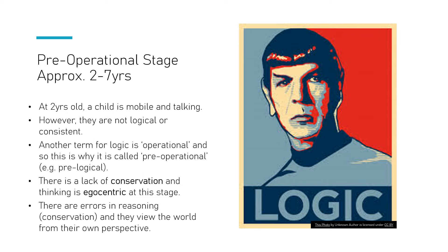Piaget pointed to things such as conservation tasks — pouring water between cups of different shapes where children think the amount is different — and egocentrism, being quite self-centred. These are both features of this stage, between two and seven years. Children in the pre-operational stage make errors in reasoning and understanding the world, making logical steps. They view the world from their own perspective, and they start getting better as they approach seven years.